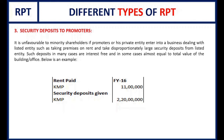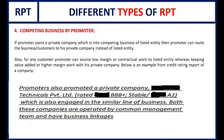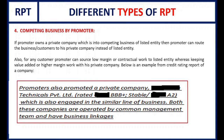The fourth scenario is competing business by promoters — a conflict of interest where the promoter also runs a similar private company. Because the private company is 100% owned by the promoter whereas the public listed company has other shareholders, the promoter may route business or customers to the private company. In one snapshot, the annual report disclosed that the promoter also promoted a private company engaged in a similar line of business, with both companies operated by a common management team and having business linkages.